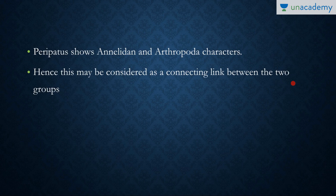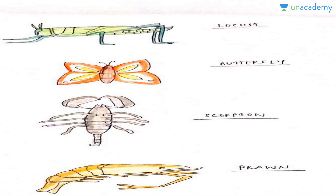An important MCQ to remember: Peripatus is considered the connecting link between Annelida and Arthropoda, because it has features of both phyla. Looking at some pictures: the locust is a gregarious pest and is very harmful to crops.